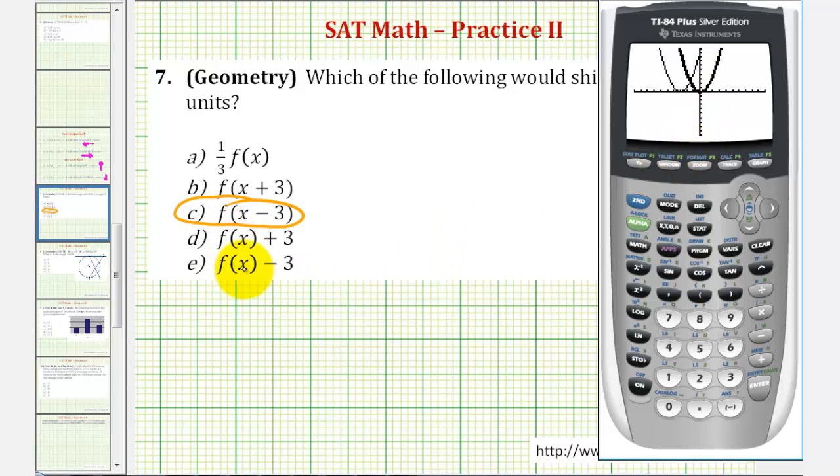Let's also check d and e. So we'll press y equals, go down to y two, and we're going to close the parenthesis here. So y one of x is f of x, and then we'll add three. What we'll notice is, d would shift the graph up three units, which we see here.